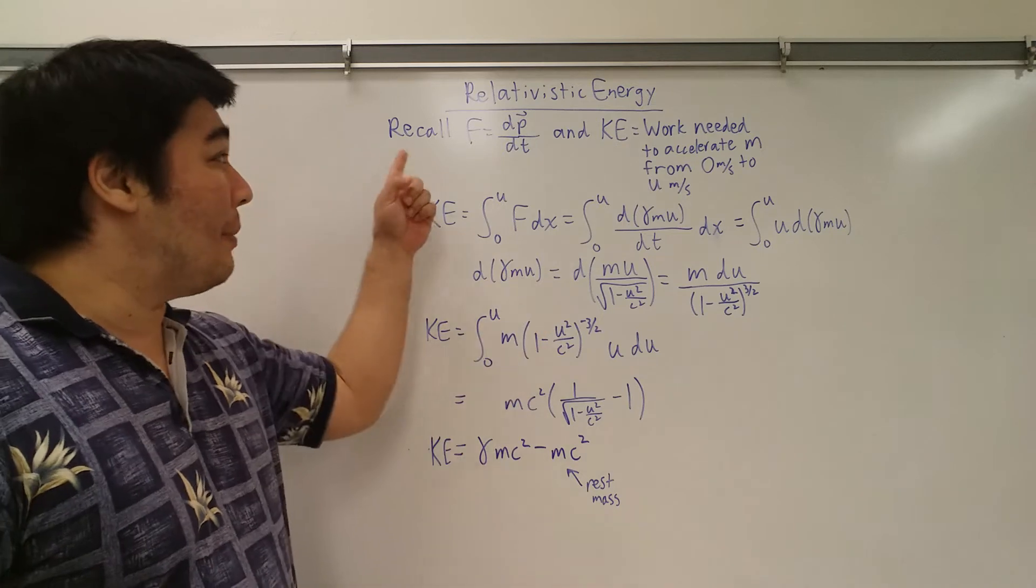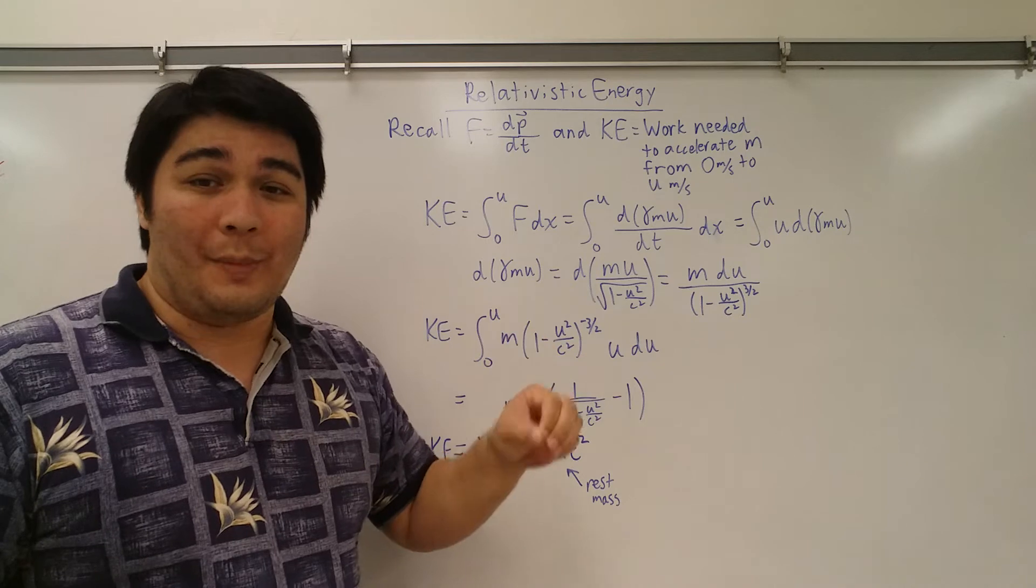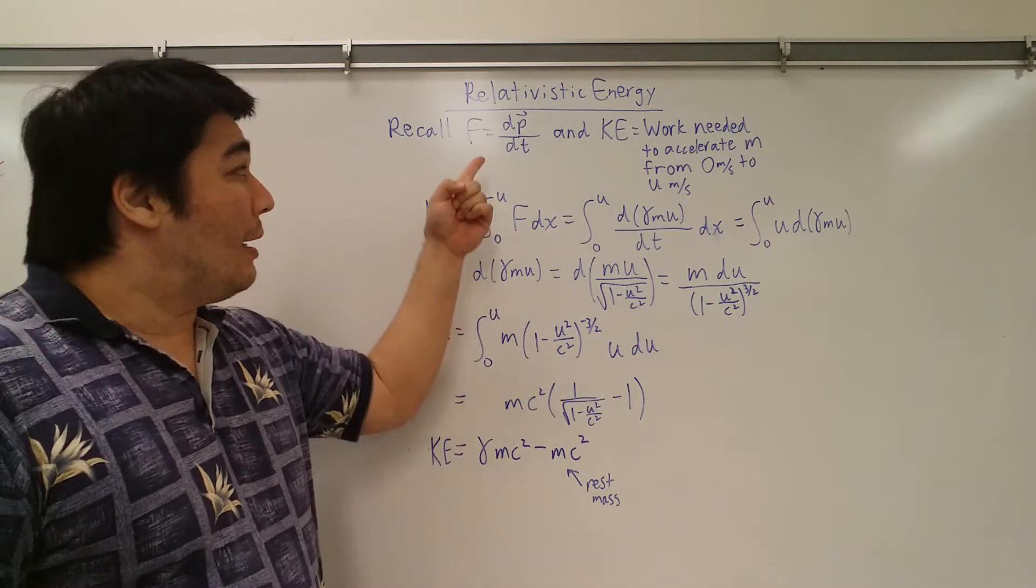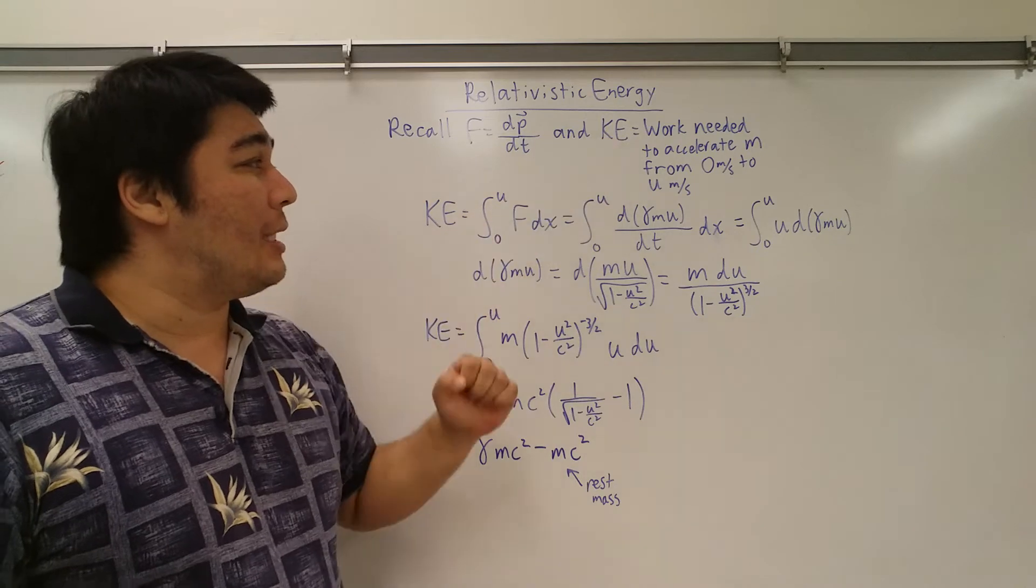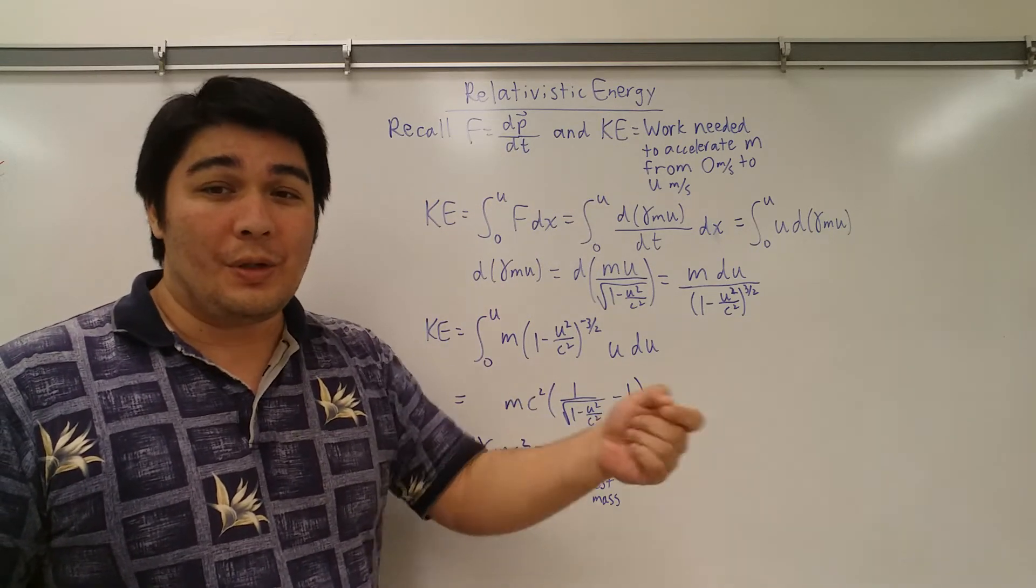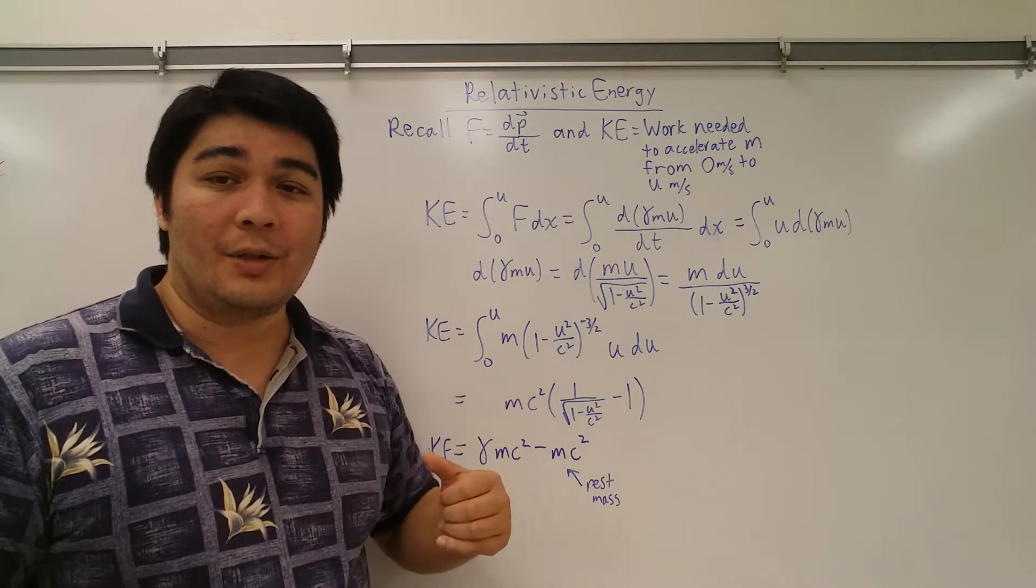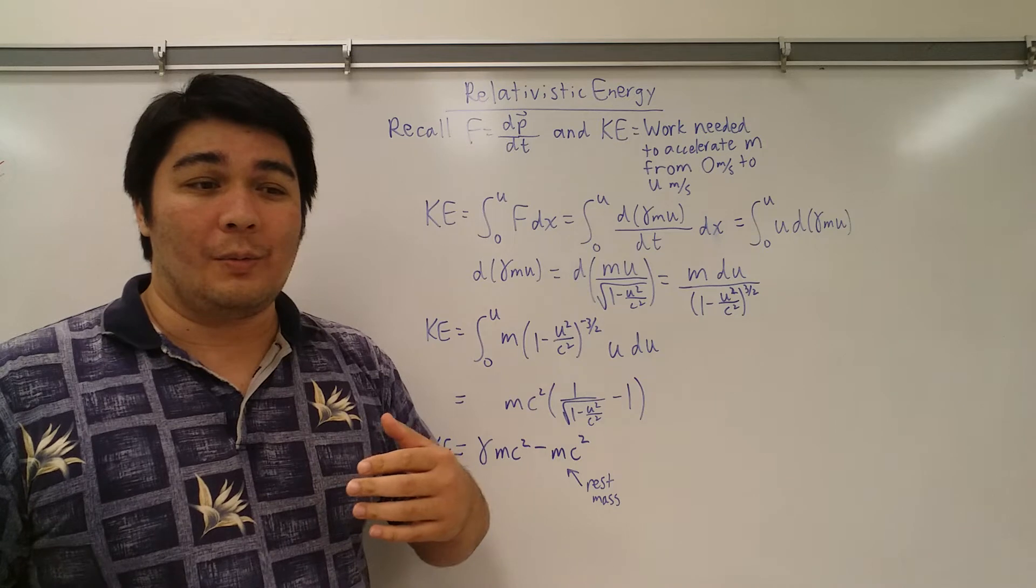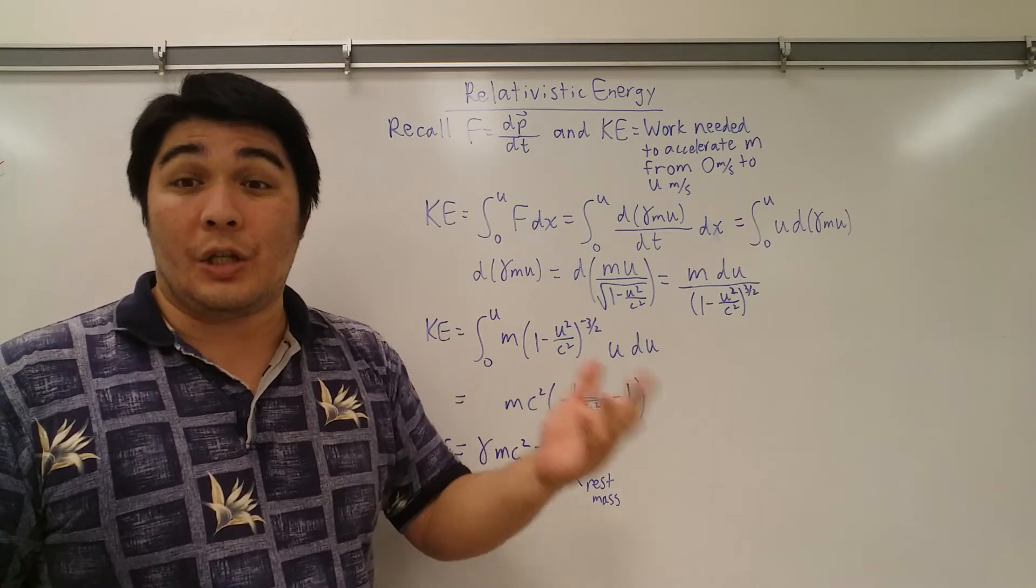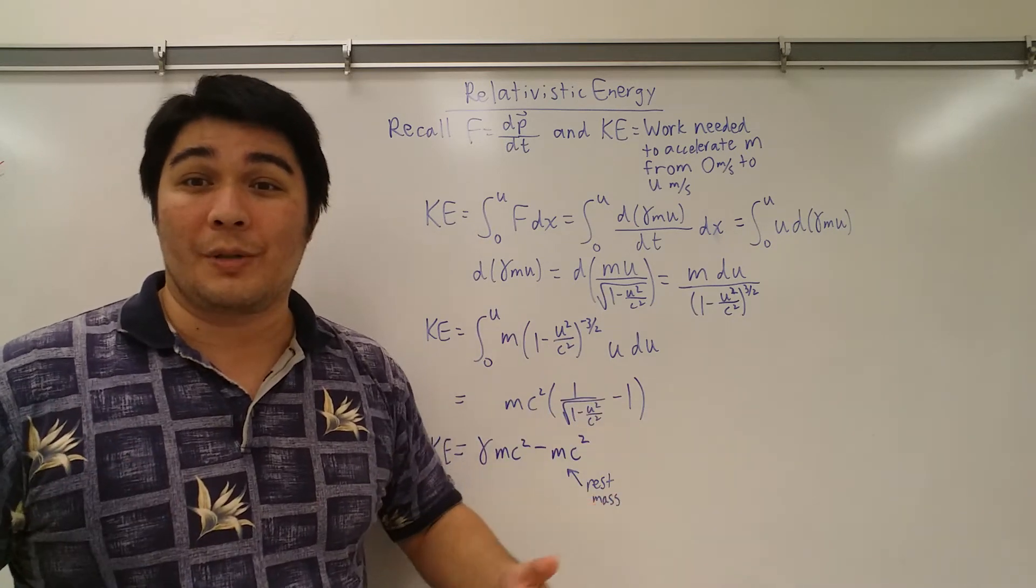We're going to first remember that force is the derivative of momentum with respect to time, dp/dt. We also remember that kinetic energy is the work needed to accelerate an object from zero to u meters per second. Of course, why u? As in the last few videos, you may remember that I changed what we're using from the velocity from v to u in order to account for the fact that we're in relativistic terms here.